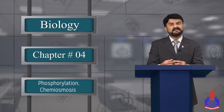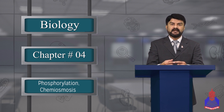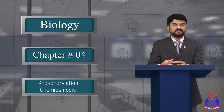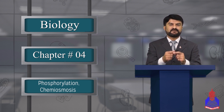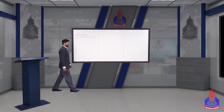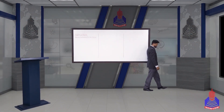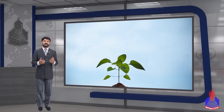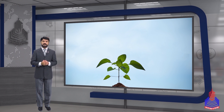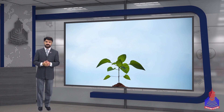Now, how does this process happen? To understand it, we move to an animation. So let's move to the animation. Now we are ready to understand the process of photophosphorylation — that is, non-cyclic and cyclic phosphorylation — on this animation.